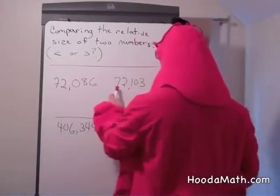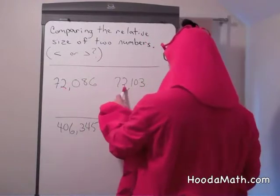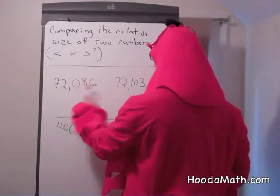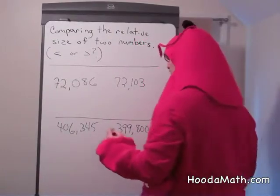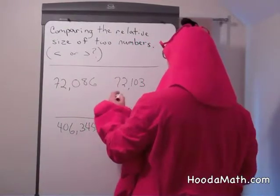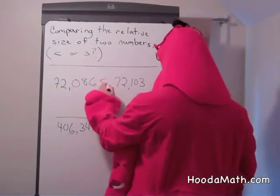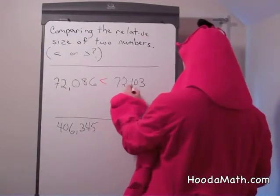Well, they both have seven, they both have a two, this is a zero, this is a one. So we know 72,086 is smaller than 72,103.